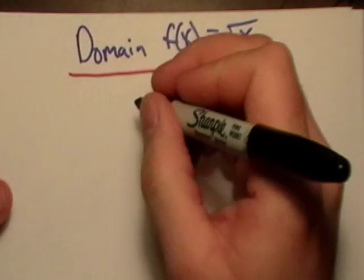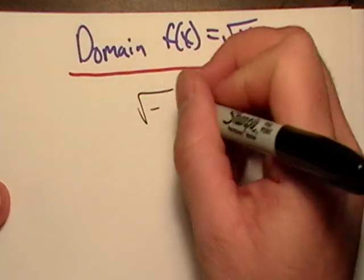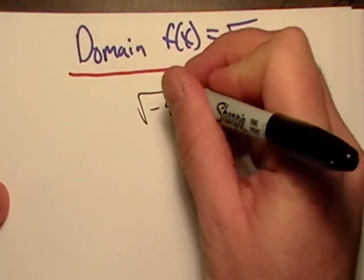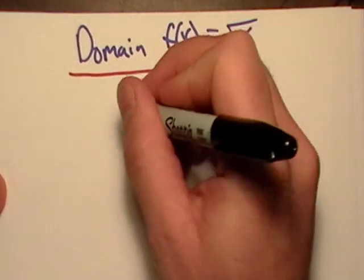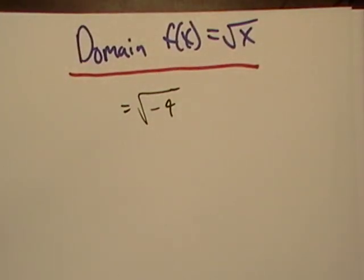So if I said, what is the square root of negative 4, you would say, well, there are no real numbers that can give me that negative 4, and you'd be right. So when talking about domain, we want to stick to the real number system.